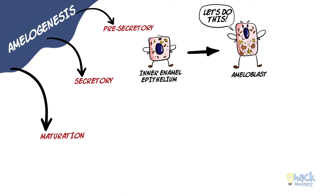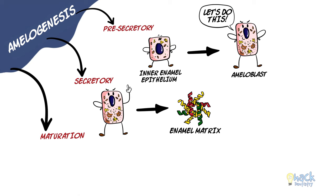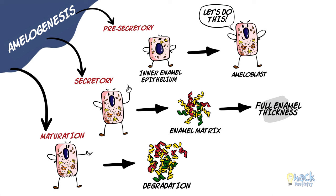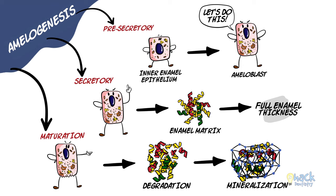In the secretory stage, ameloblasts secrete organic matrix comprising various enamel proteins, forming the entire enamel thickness. Ameloblasts carry out activities in the maturation stage that help in degradation of enamel matrix and subsequent replacement by minerals or inorganic material, thus completing the process of enamel formation.